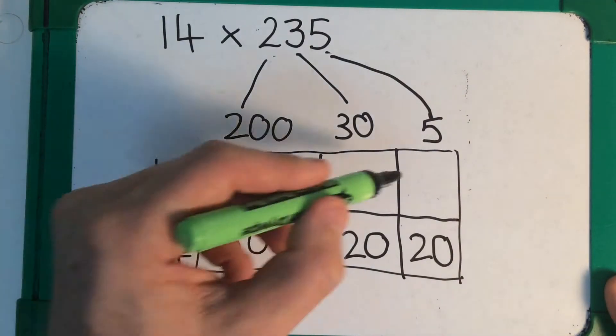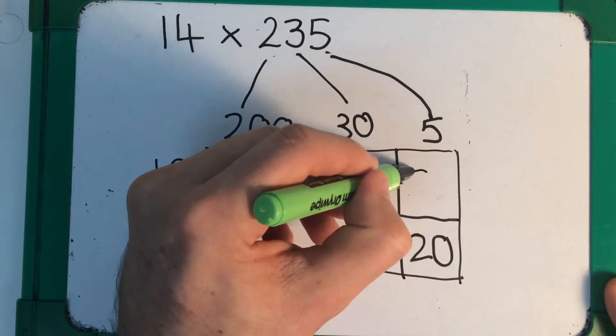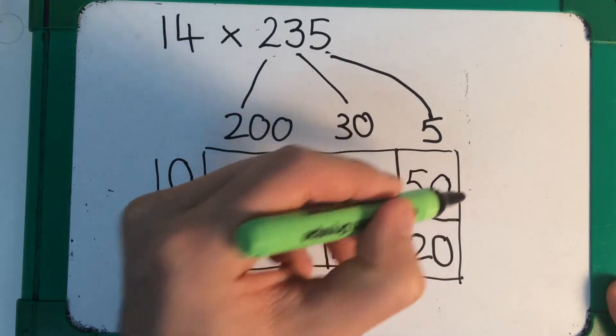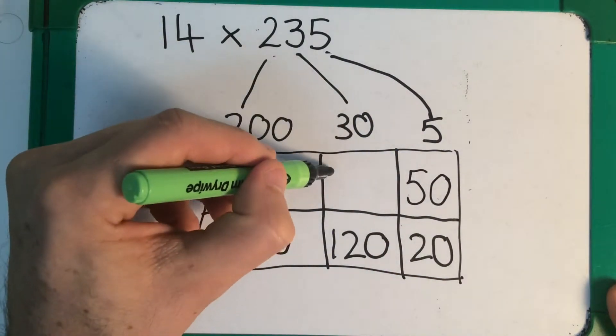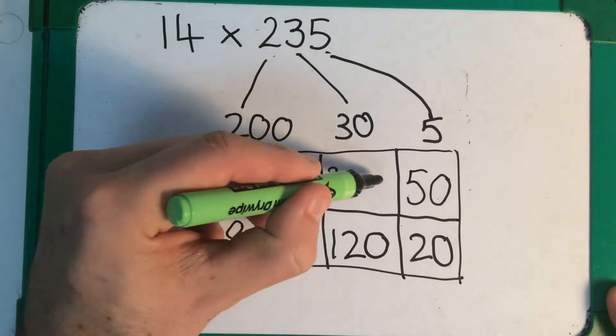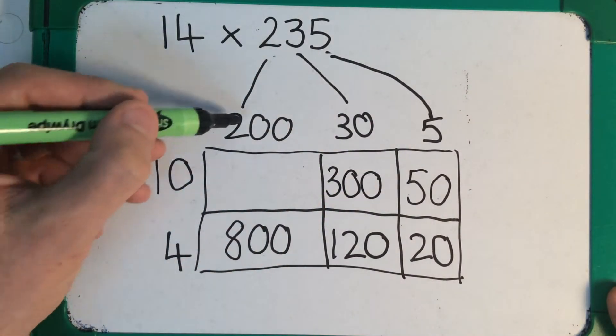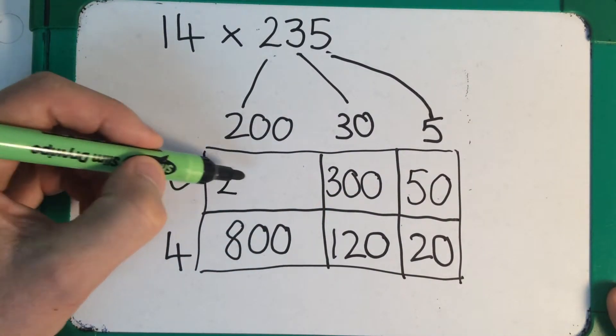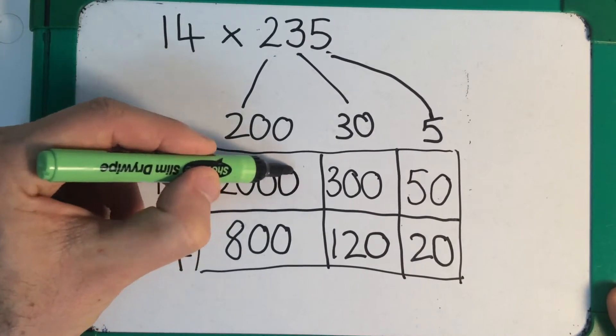and adding 0 as a place marker. So 10 times 5 is going to be 50. 10 times 30 is going to be 300. And 10 times 200 is going to be 2,000.